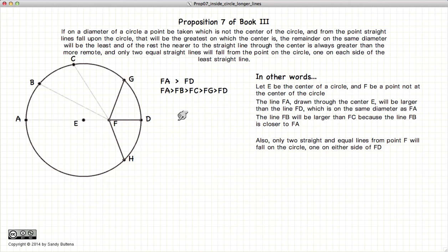The second part of this proposition states that if we have a line FG, there is one and only one other line, FH, that is equal in length to FG, and it will be opposite this line of FD. So that's what this proposition is stating.